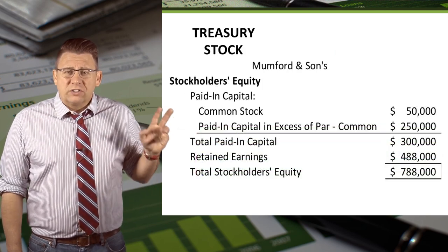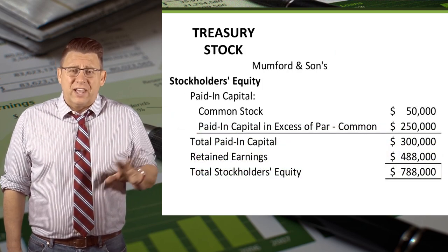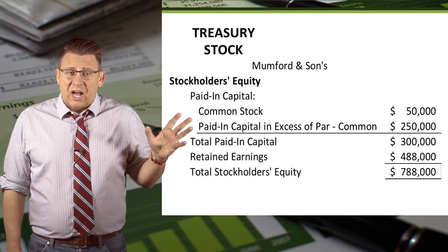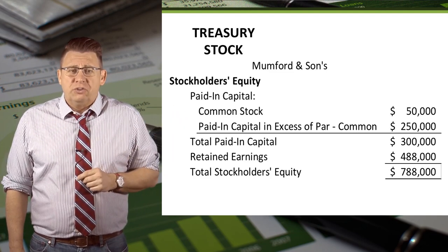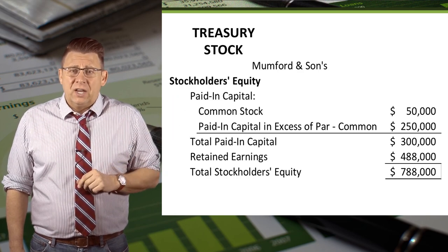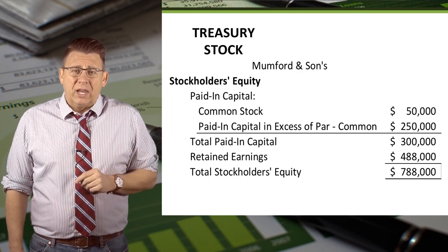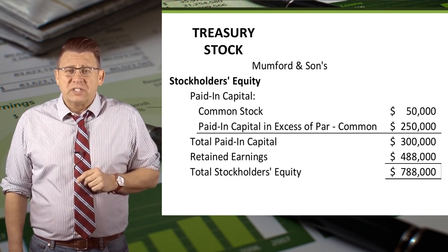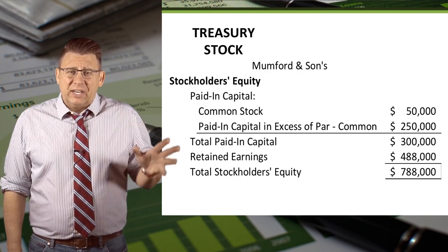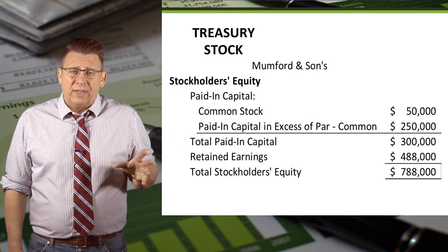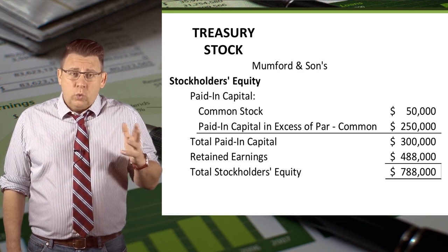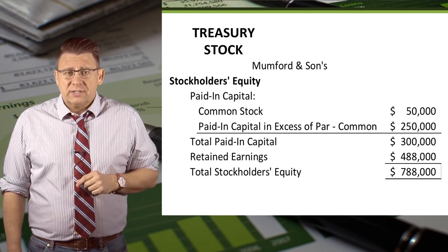The stockholders' equity section after all of these transactions is shown here. Treasury stock is gone because all of the stock was reissued. Paid-in capital for Treasury stock is gone because we used that available balance when we sold the stock below cost. And finally, retained earnings has decreased by $12,000 to cover the amount needed when the stock was sold below cost.